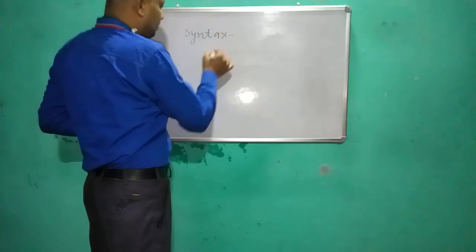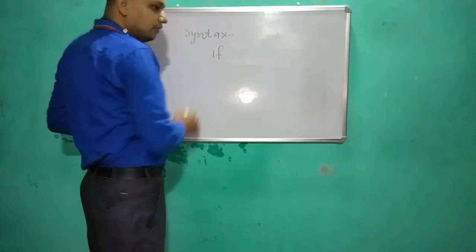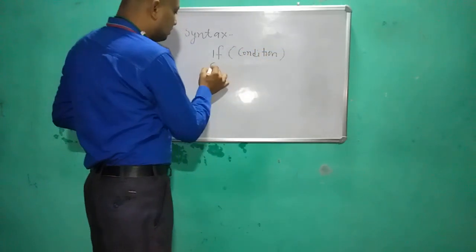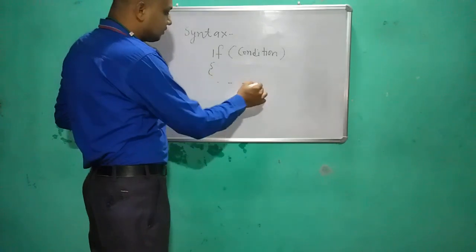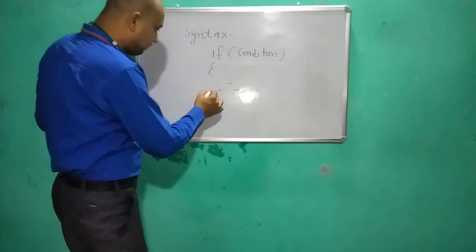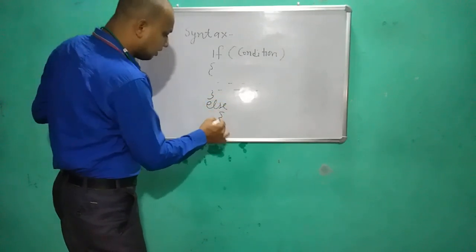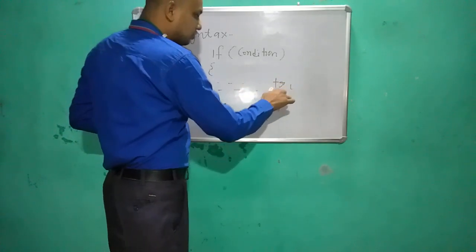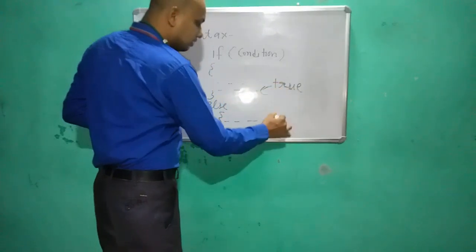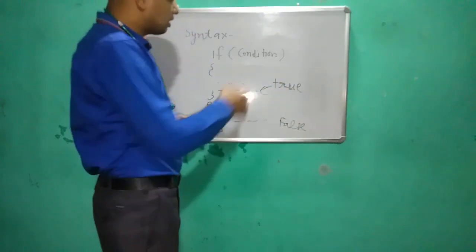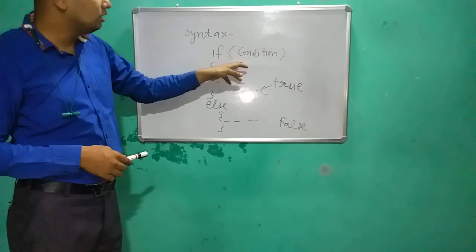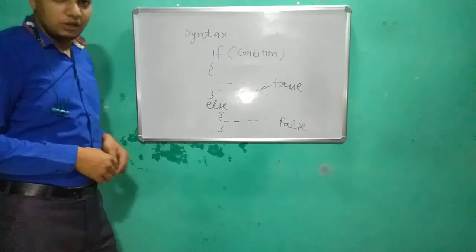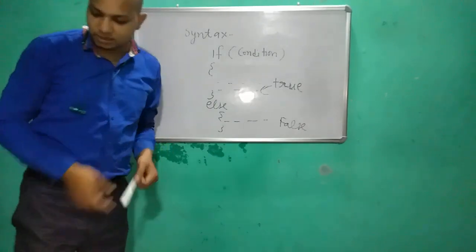The syntax of if-else: first we write the 'if' keyword, then we give a condition. After the condition, the set of statements to be executed is written. If the condition is false, some other set of statements gets executed. If true, the if-block runs; if false, the else-block runs. A condition is evaluated and according to the condition, the statements will be executed. This is the if-else syntax.